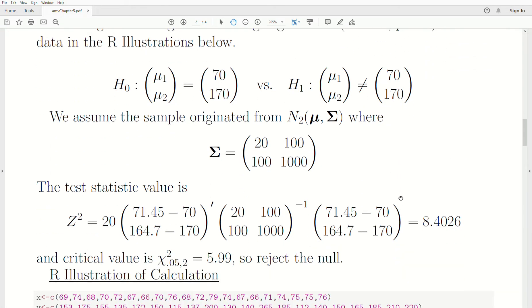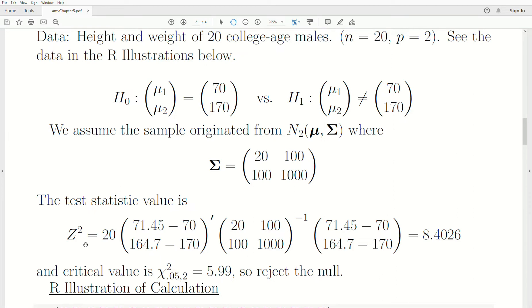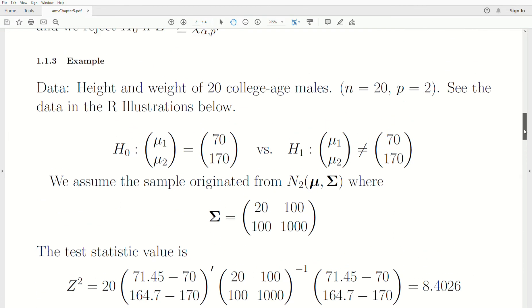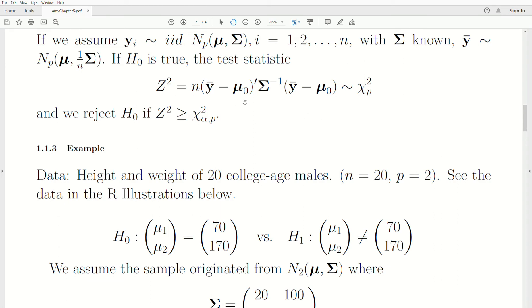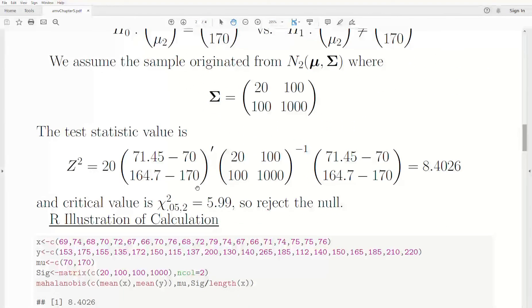So the test statistic is this, Z², and we're going to fill in the values for this formula. So 20, and the sample mean vector is 71.45 and 164.7. 70 and 170 is the hypothesized value. This is the covariance matrix. And then this vector is the same. When you do that matrix multiplication, you get 8.4026.